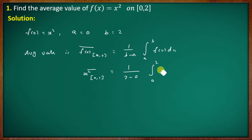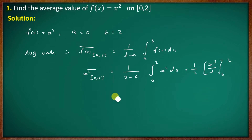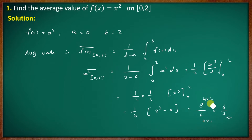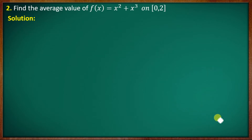Substituting: f(x) = x², interval [0, 2], equals 1 over (2 minus 0) times the integral from 0 to 2 of x² dx. That is 1/2 times [x³/3] from 0 to 2, equals 1/2 times 1/3 times (2³ minus 0), equals 1/6 times 8 = 8/6, simplified to 4/3.